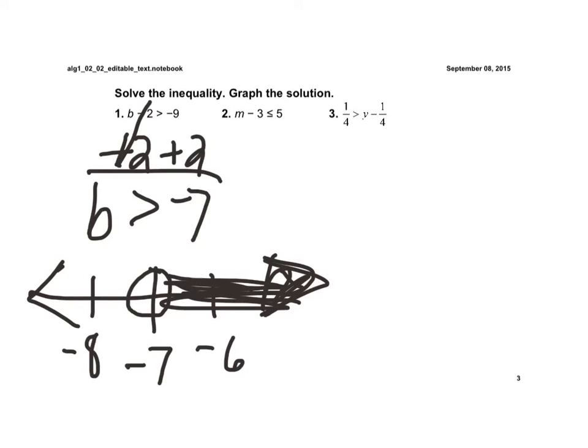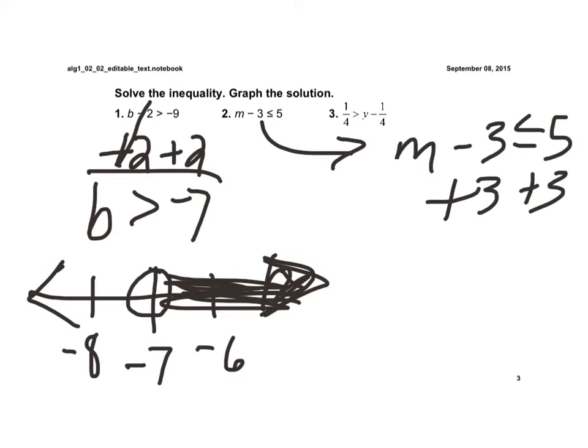Now, I'm going to do number 2, and we'll slide this one over here. So, I have m minus 3 is less than or equal to 5. Now, again, we just go ahead and solve for m by adding 3 to both sides. Again, the negative 3 and the positive 3 cancel out, so I get m is less than or equal to 8.